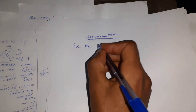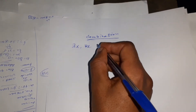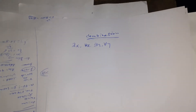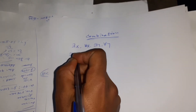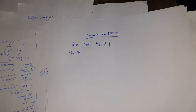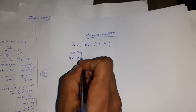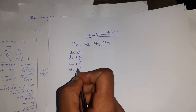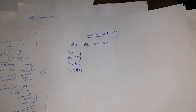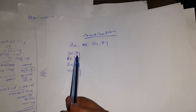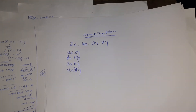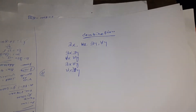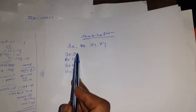The combinations are: existential x, existential y; existential x, existential y, universal y; existential x, existential y, universal x, universal y; and existential x, existential y.